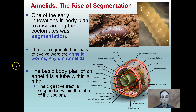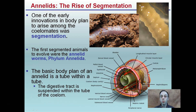The basic body plan of an annelid is the tube-within-a-tube concept. The digestive tract is suspended within the tube of the coelom. This actually holds true for us as well — our intestines and digestive system are a tube within our body cavity. That's where the term 'tube within a tube' comes into play.